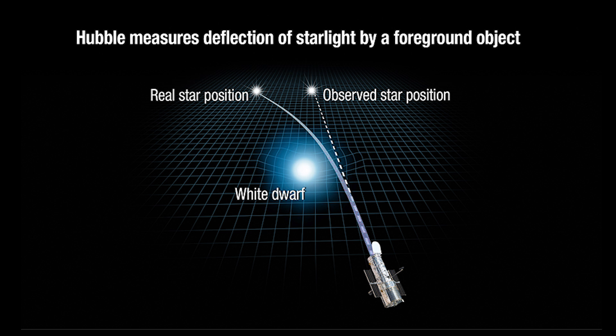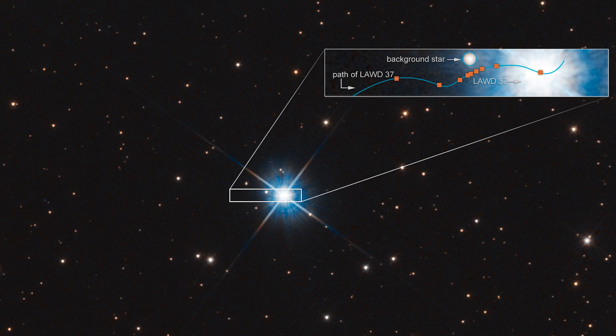To do this, scientists tracked the position of a star that travelled behind a white dwarf using the Hubble telescope. As the star moved behind the white dwarf, they were able to measure where the star appeared to be and compare this to where the star should be. The difference in these two positions tells us how much the light has curved around the white dwarf from the spacetime curvature, and thus how heavy the white dwarf is — which in this case was around half the mass of our sun.